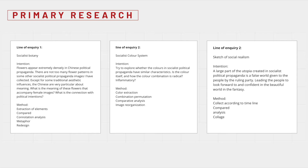I found three inquiries and they correspond to three different directions: socialist botany, socialist color system, and sketch of social realism. I also tried different research and experimental methods, but these methods did not appear at first. It was difficult at the beginning and the progress was very slow, but I can feel that my ideas will gradually become clear as I continue to search and try.